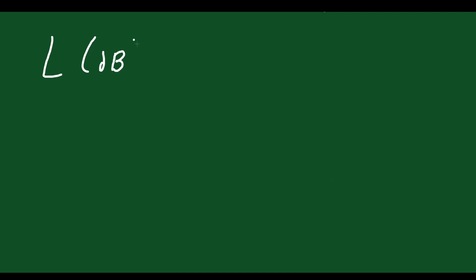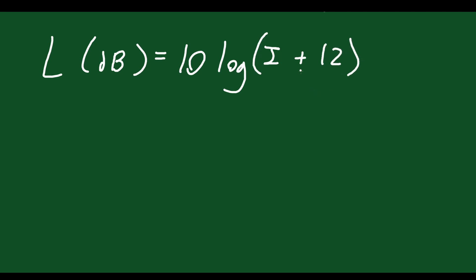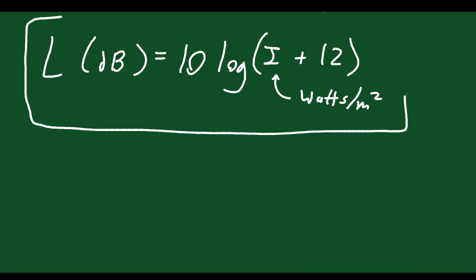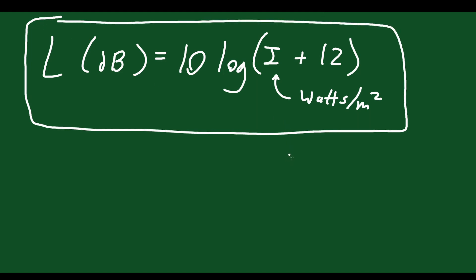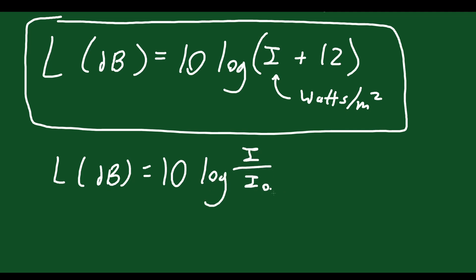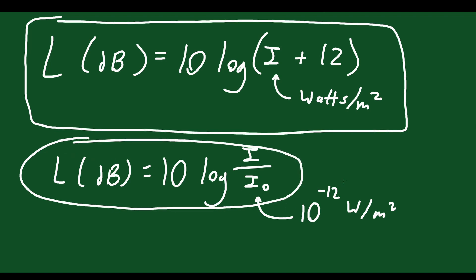We have another equation: the loudness of something in decibels equals 10 times the log of I plus 12, where I is the intensity measured in watts per meter squared. There's also an equation where loudness in decibels equals 10 times the log of I over I₀, with I₀ being a standard reference — typically 10 to the negative 12 watts per meter squared. These equations aren't as common as the first ones, but you can still use them for certain things.